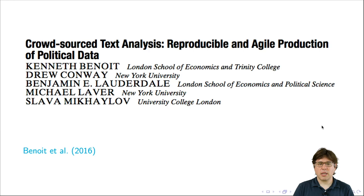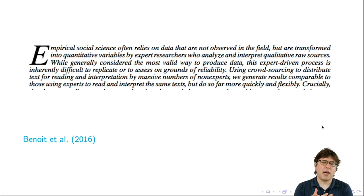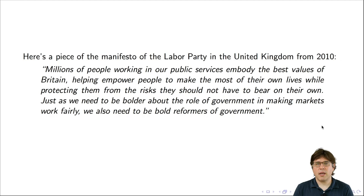Now I want to tell you about a second project that is from the social sciences and illustrate some other really exciting features about human computation projects. This is about Crowdsourced Text Analysis, Reproducible and Agile Production of Political Data by Benoit et al. Basically, what this paper is about is they argue that, in fact, often in social science, we don't use data that's directly observed. We often use data that's directly observed is then transformed by experts and then the transformed data is used by researchers. They argue that this expert driven process is actually not very replicable and they try to argue that this is a bad thing and not a good thing. They're going to try to argue that by doing it through a mass collaboration, rather than relying on experts, you actually get better properties.